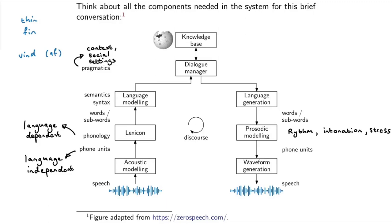In the last few years everyone has been talking about ChatGPT — the generative pre-trained transformer-based language model. In a way, GPT actually encompasses more or less the top part of this pipeline, all glued together in one model. It was trained on the internet or large parts of it, so it actually contains the knowledge base, and because of how it was trained it functions as a language model and can generate language. But it's still good to know about these individual blocks and to think about the internal processes that something like GPT is going through.